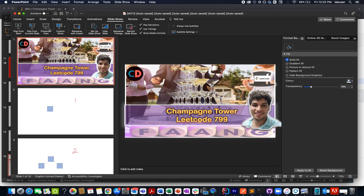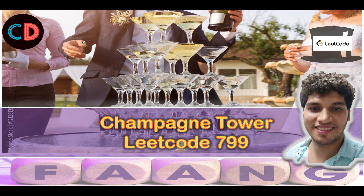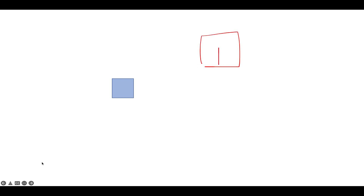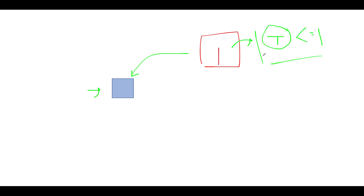Champagne Tower is LeetCode problem 799, a medium level question. We will exactly follow the simulation as if we are actually pouring the champagne. Consider the total quantity of champagne given to us equals one. The entire champagne will get poured into the topmost glass and all the remaining glasses below this level will remain empty. This is true as long as the total quantity lies within or equal to one.